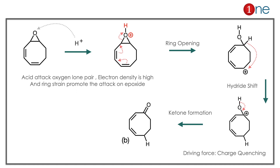The cation forms near the alcohol. Hydrogen leaves and ketone formation occurs — that is product B. Key learnings: electrophiles always attack the site of highest electron density. Ring opening occurs when the epoxide is conjugated with a double bond and the charge travels. Here the charge is quenched by a hydride shift leading to ketone formation.